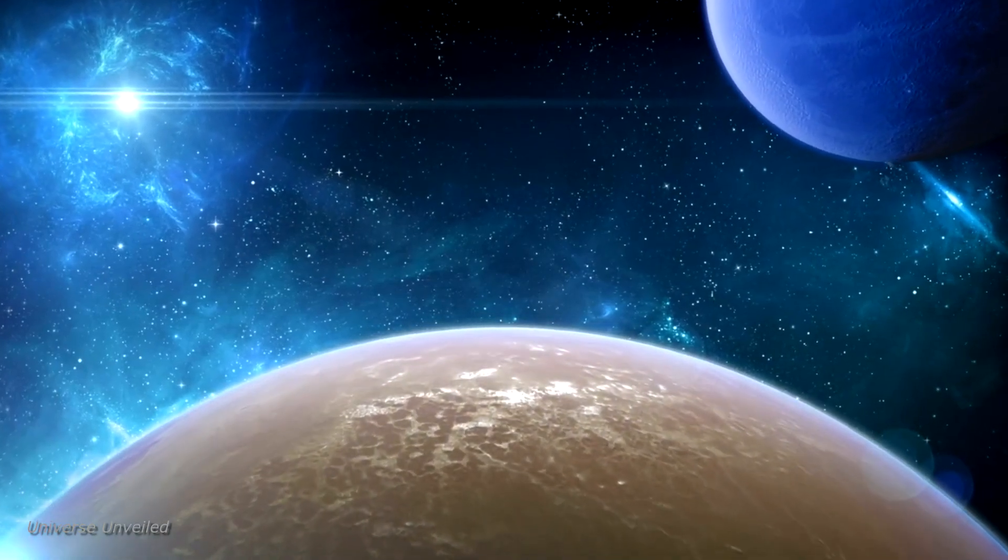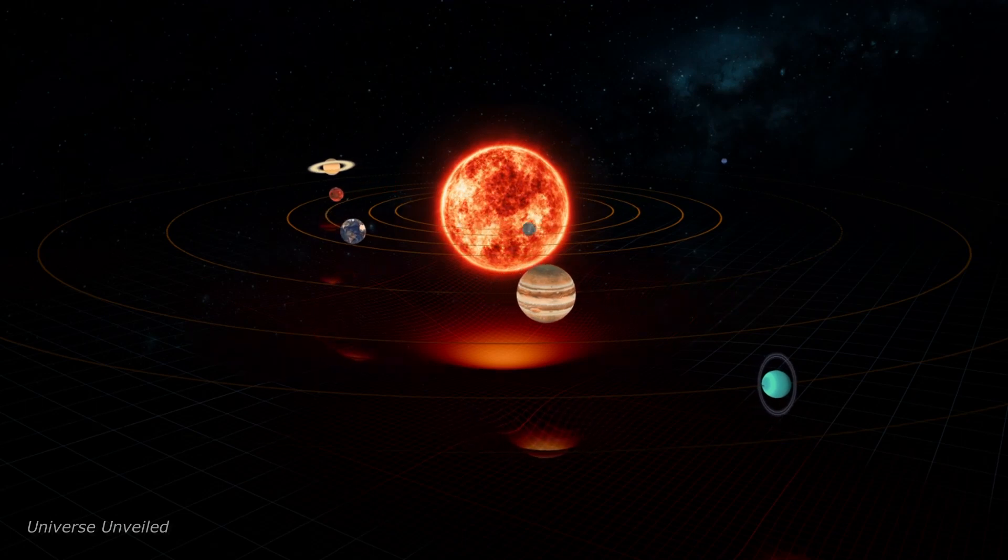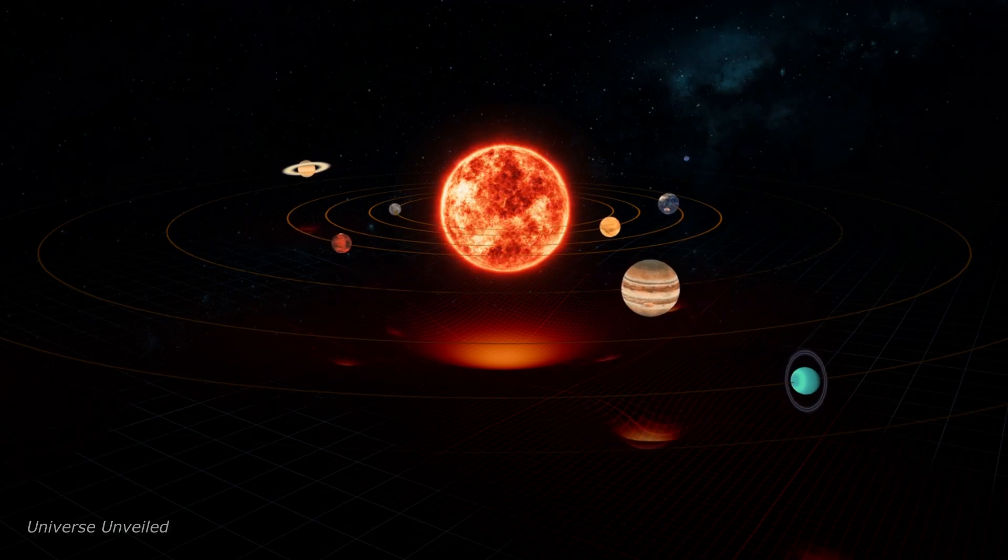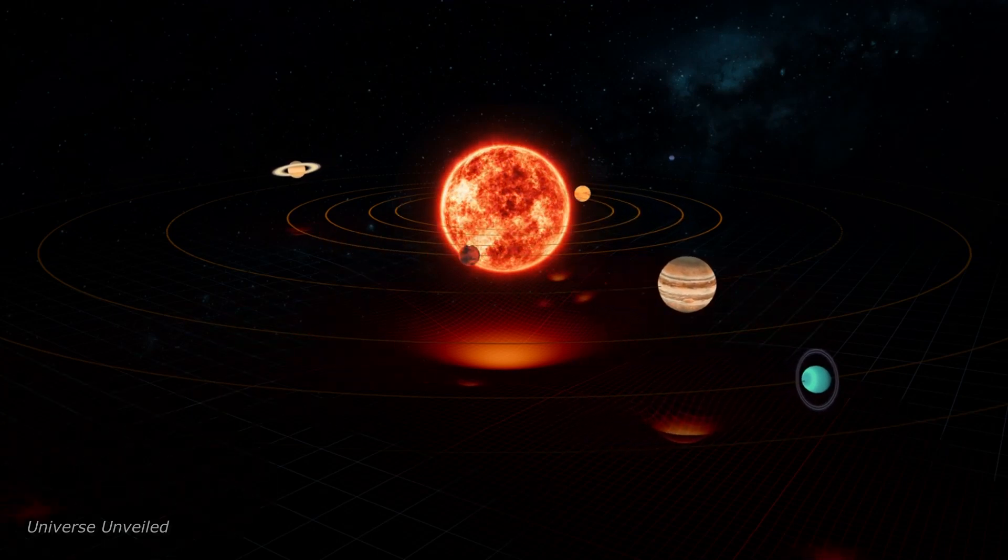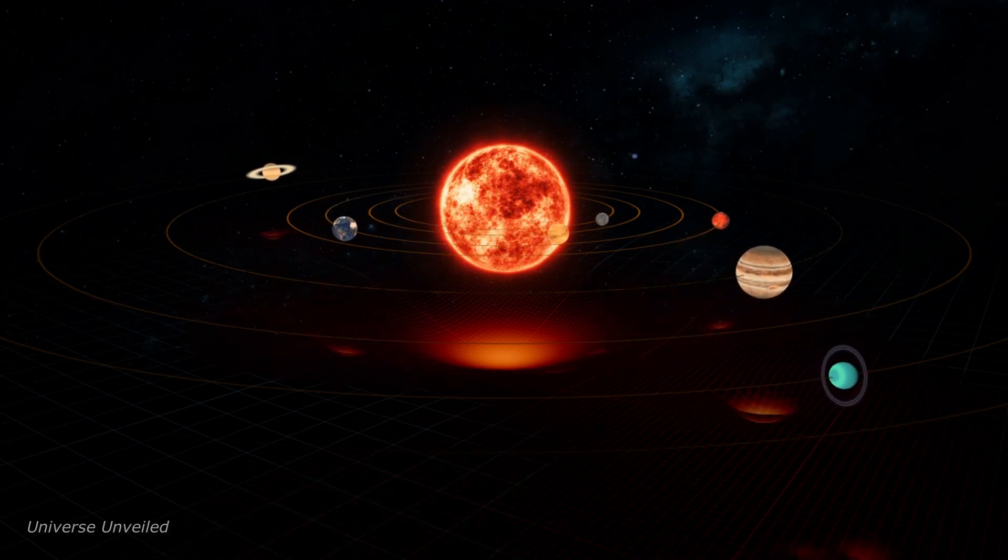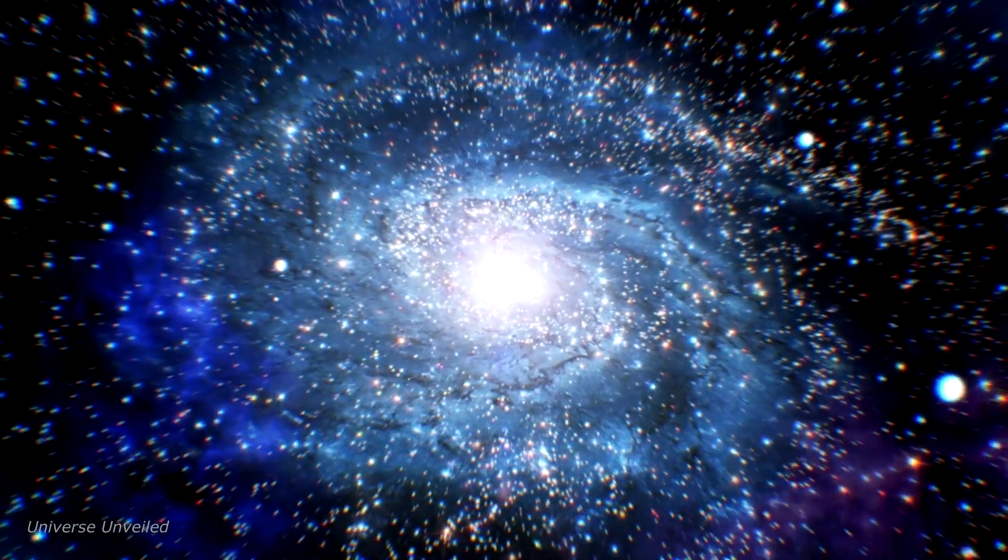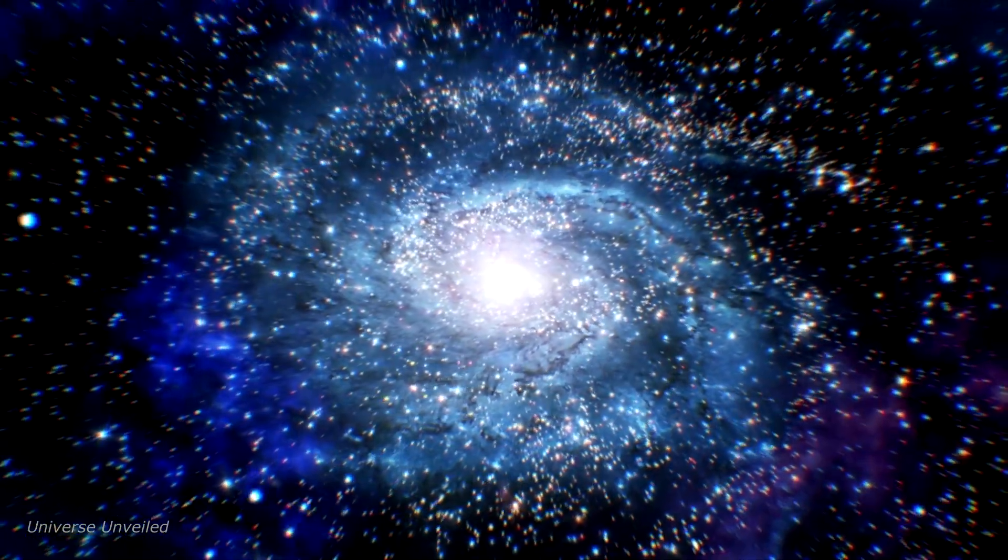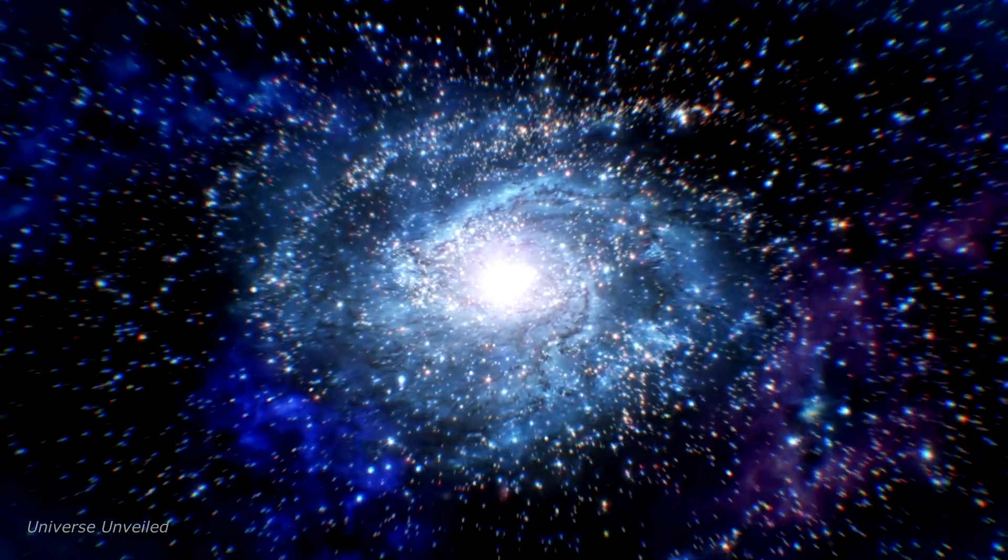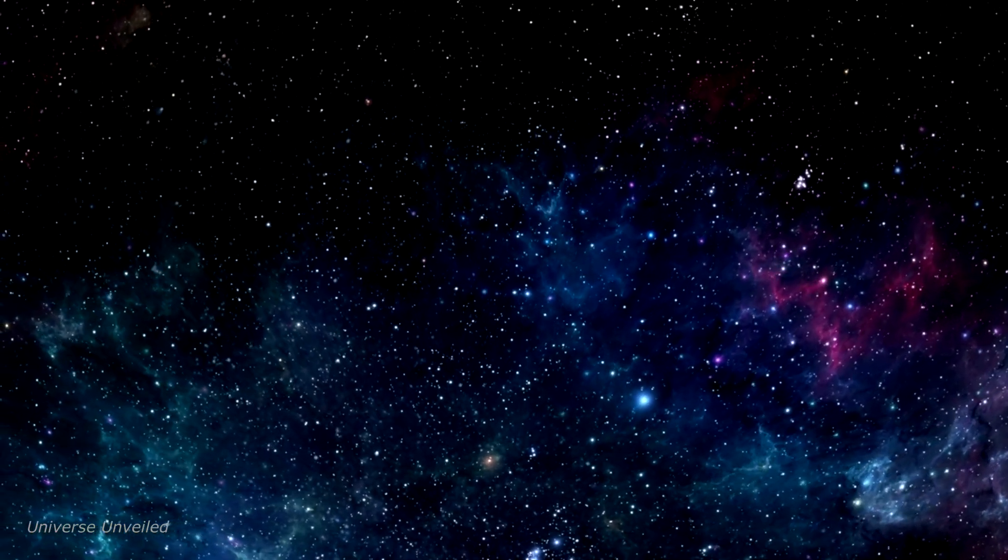And that's where the James Webb Space Telescope comes in. This remarkable piece of technology is set to revolutionize our understanding of the universe and it will play a crucial role in our quest for habitable planets. The James Webb Space Telescope will allow us to peer deeper into the cosmos, to study planets in greater detail and to uncover the secrets of their atmospheres. It will provide us with the tools we need to discern the difference between a planet that simply exists in the habitable zone and a planet that is truly habitable.